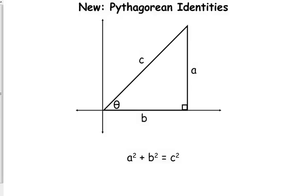The Pythagorean identities. The reason why they are named the Pythagorean identities is because they are derived from the Pythagorean theorem.